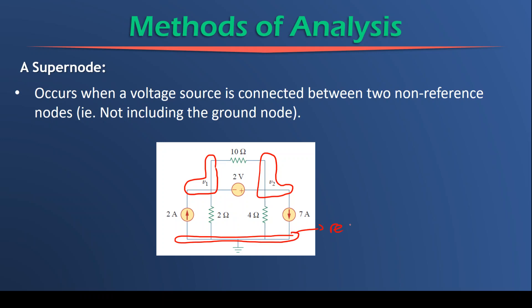So this we know as the reference node. If you have any voltage sources connected between two non-reference nodes, in other words between in this case the node of V1 and V2, then you will have a supernode. And as we can see we do have a voltage source, the 2 volts that's connected between node 1 and node 2.